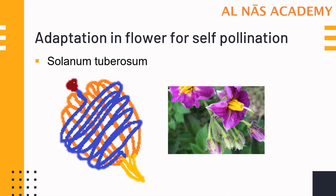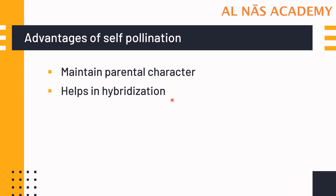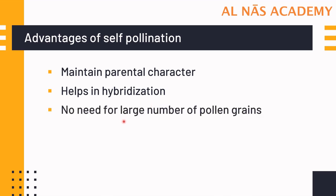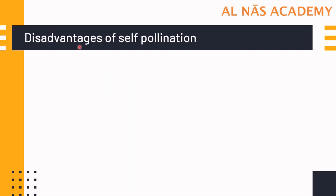In self-pollination, fertilization is assured. The first advantage is that it maintains parental characters or purity of the race, and that is why it helps in hybridization — self-pollination is used to maintain pure lines for hybridization experiments. There is no need to produce large numbers of pollen grains, and no special devices are required to attract insect or biotic pollinators. It also ensures seed production.